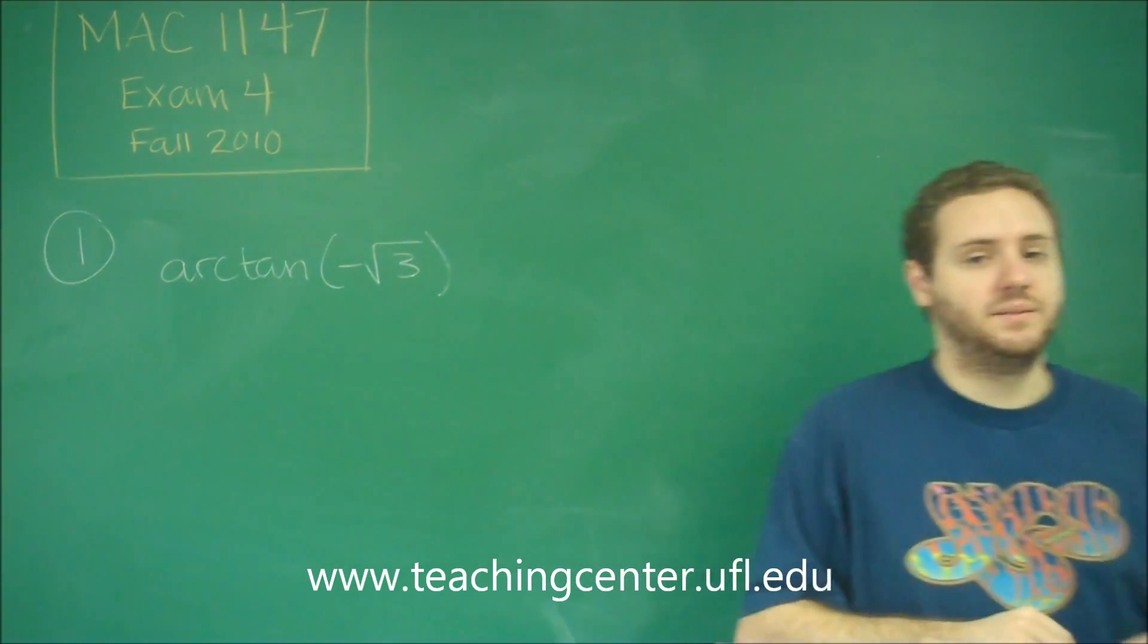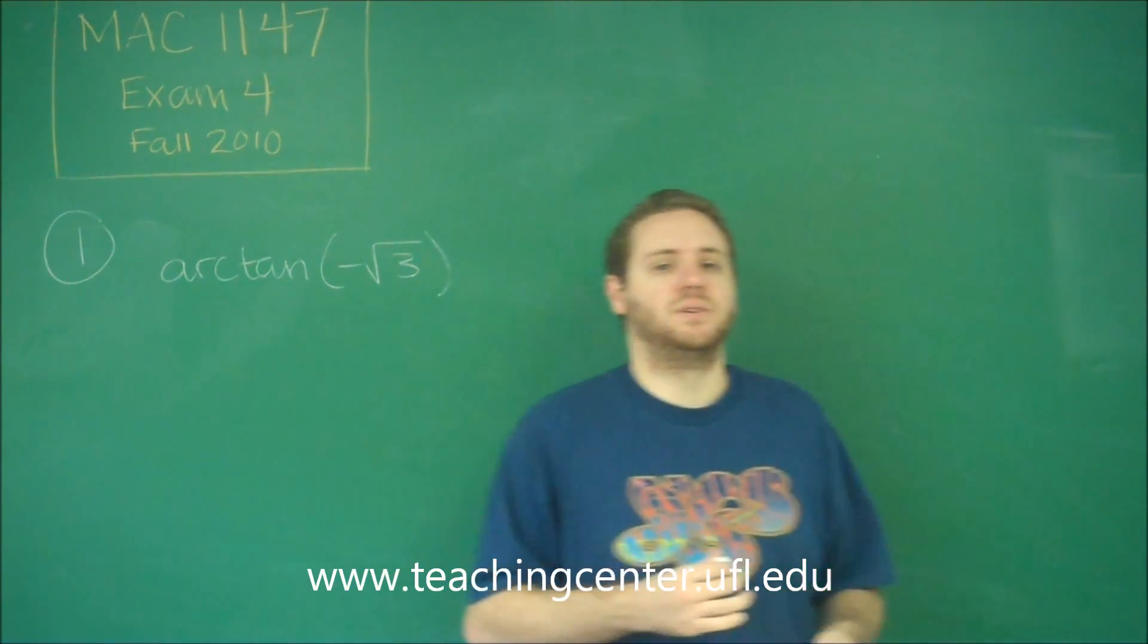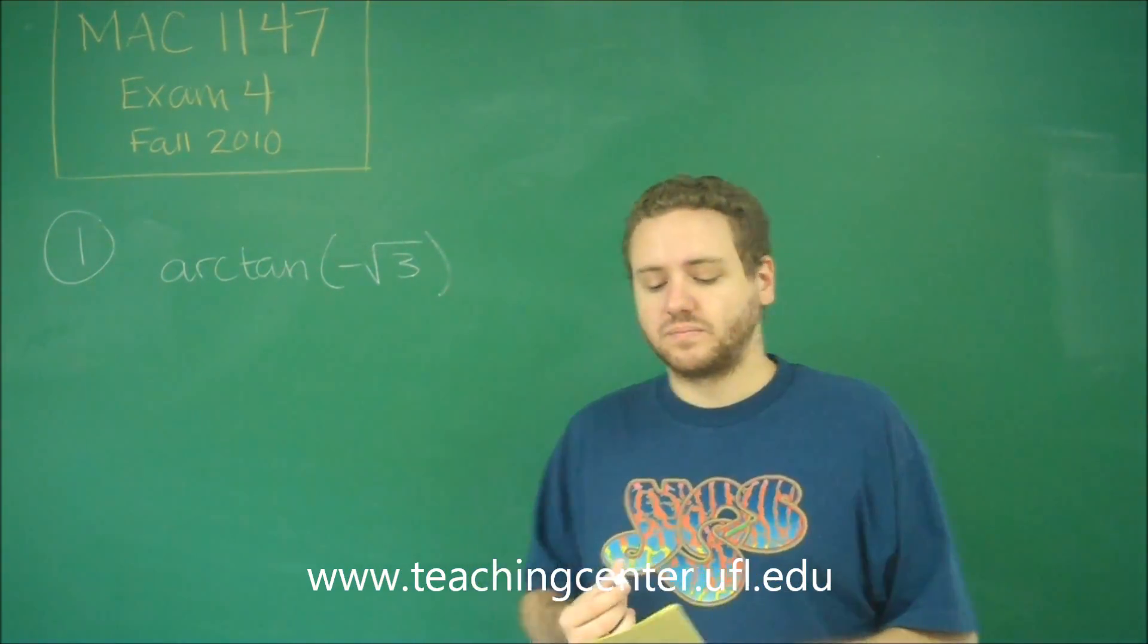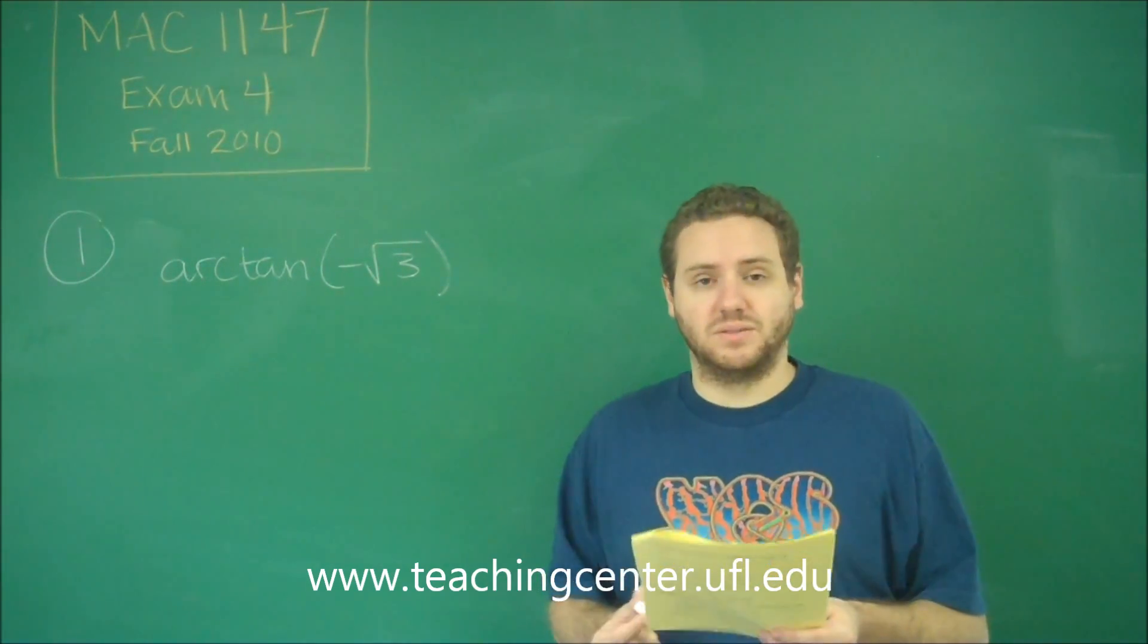So for arctan and arcsine, the answer to this has to be between negative pi over two and pi over two. In other words, it can only be an angle in quadrants one or four. For arccosine, it would have to be in quadrants one or two, so from zero to pi.